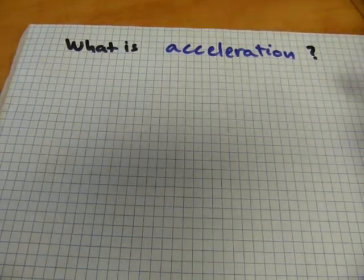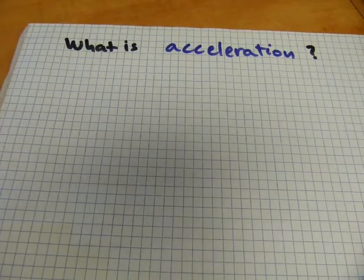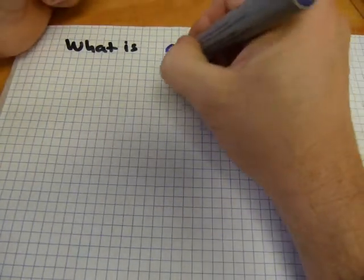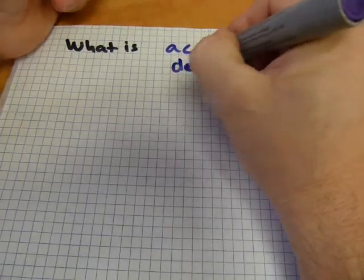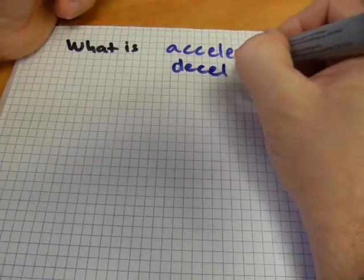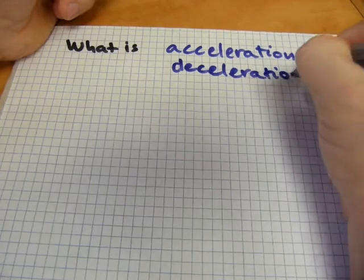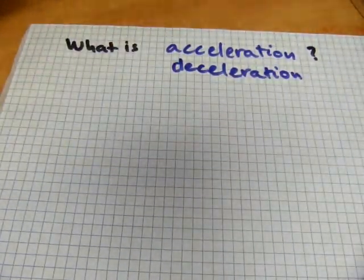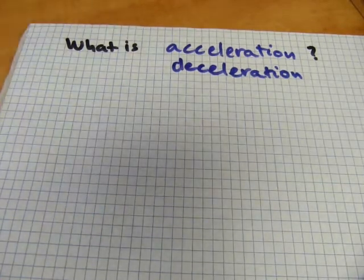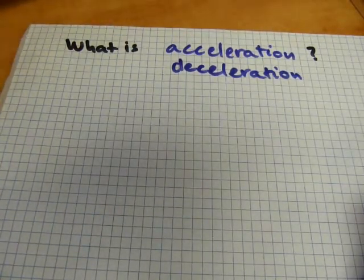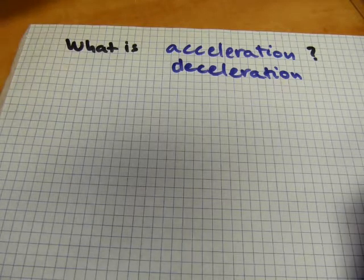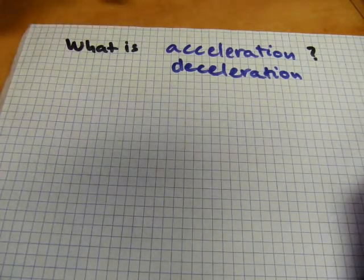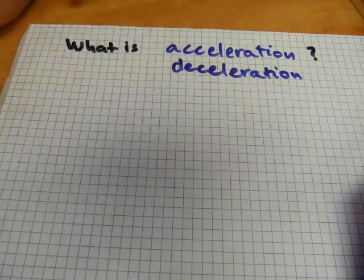When we consider acceleration, we should also consider its counterpart, deceleration, because they're two sides of the same coin. I'm just gonna write deceleration here quickly because they're really related items all about speed and the changes that happen to that speed. Acceleration is just a fancy word for going faster and deceleration is just a fancy word for slowing down.